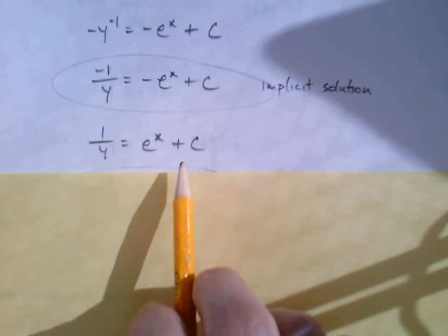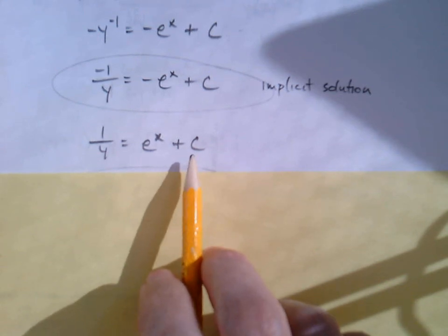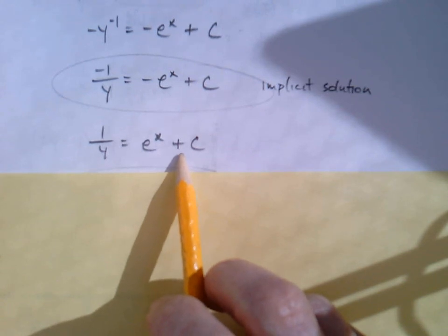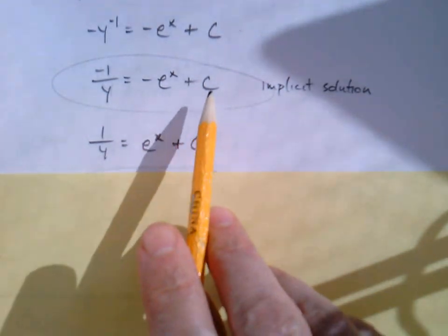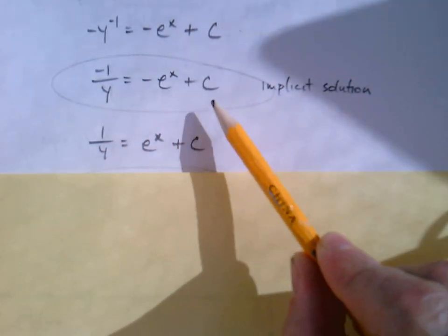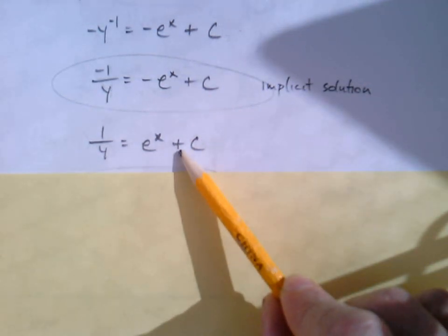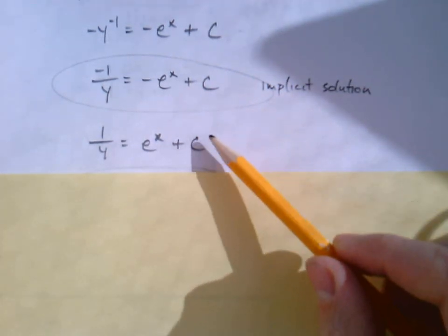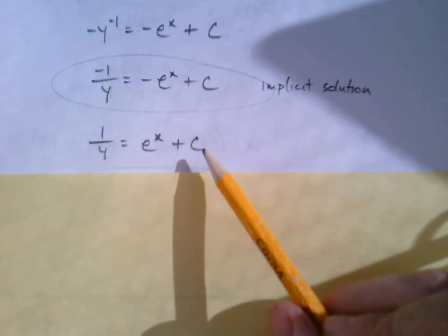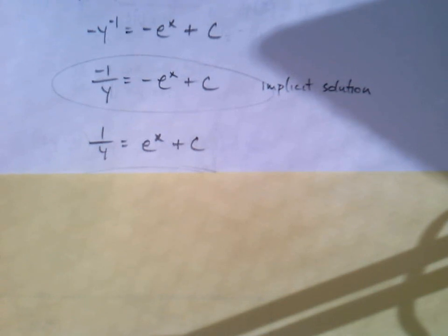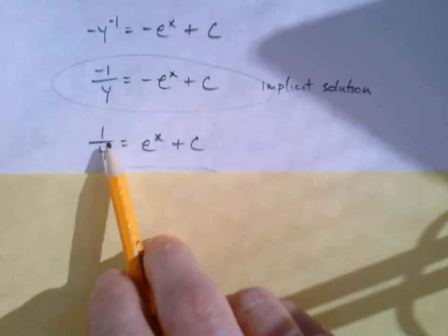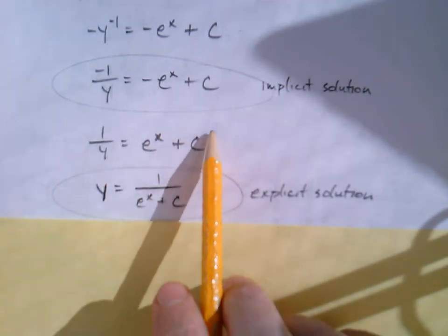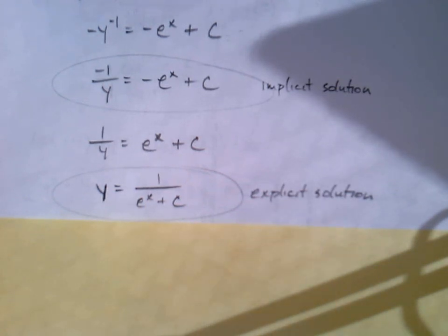I guess you could write minus C if you really wanted to, but isn't a negative arbitrary constant the same as a positive arbitrary constant? It's still an arbitrary constant. With arbitrary constants we prefer to think of them as being added versus subtracted. That C did get multiplied by a negative, so technically this is not the same C as it was before, but we're still going to say plus C because it's arbitrary. It's a number - maybe it's positive, maybe it's negative, doesn't matter.